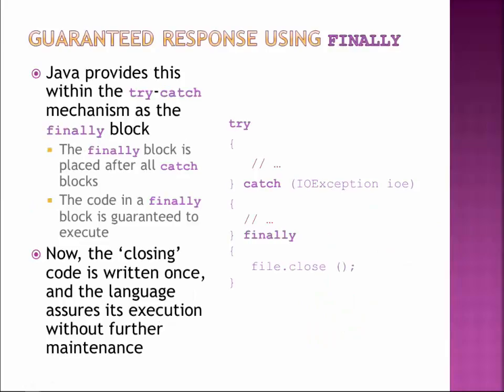What we want instead is called the finally block. I have a try block — these are the things that could go wrong. I have the catch block — this is my response to if something goes wrong. You can have any number of catch blocks. And then you have the finally block that says whether or not anything went wrong, you need to do this stuff.